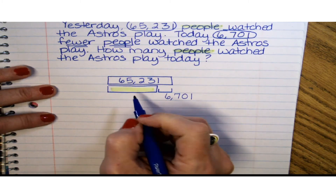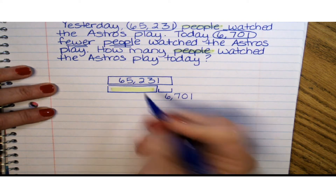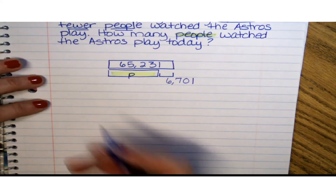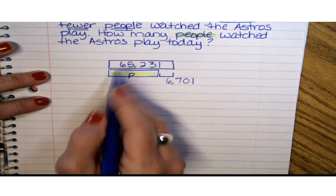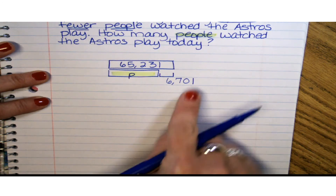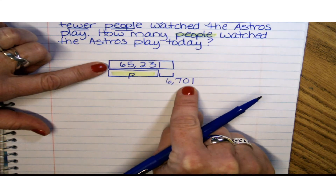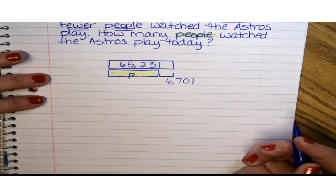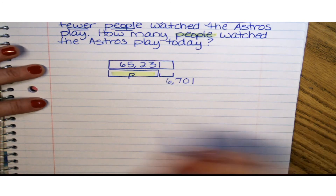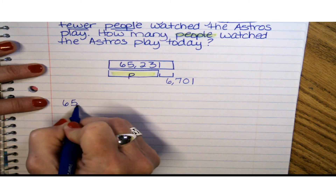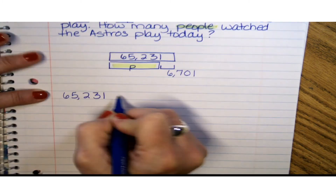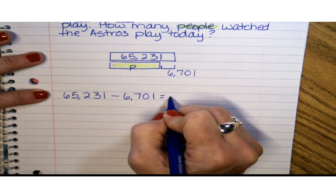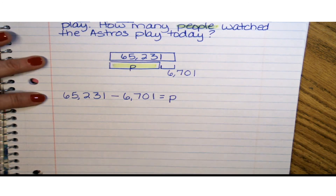We're looking to fill this strip here, and that's going to represent the number of people that watched the Astros play today. We can use a variable to represent that number, and since we're looking for the amount of people, we can have that represented with a P. Now we're going to create an equation to match what we have put in our strip diagram. We know that we're looking for the difference between yesterday and today, and the difference is the answer to a subtraction problem — so that gives us a hint about what operation we're going to use. For my equation, I'm going to take the amount of people from yesterday and subtract 6,701 from that amount, and that is going to represent P, the number of people that watched the Astros play today.